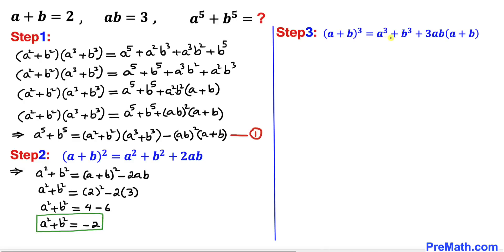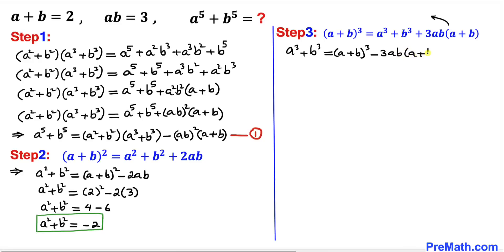For the next step, let's recall the identity: (a plus b) cubed equals a cubed plus b cubed plus 3ab times (a plus b). We isolate a cubed plus b cubed, giving us: a power 3 plus b power 3 equals (a plus b) cubed minus 3 times ab times (a plus b). Our a plus b value is 2 and our ab value is 3.